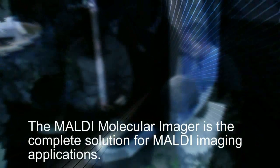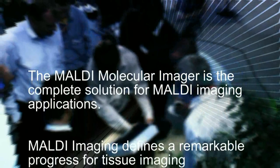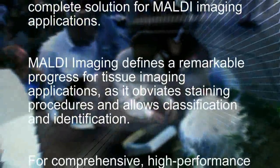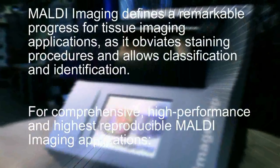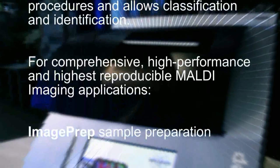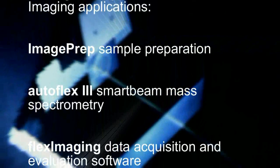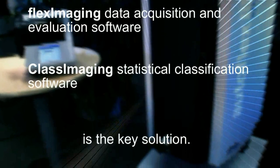The MALDI molecular imager is the complete solution for MALDI imaging applications. MALDI imaging defines a remarkable progress for tissue imaging as it obviates staining procedures and allows classification and identification. For comprehensive, high-performance, and highly reproducible MALDI imaging applications, the key solution comprises: image prep sample preparation, AutoFlex III smart beam mass spectrometry, FlexImaging data acquisition and evaluation software, and class imaging statistical classification software.